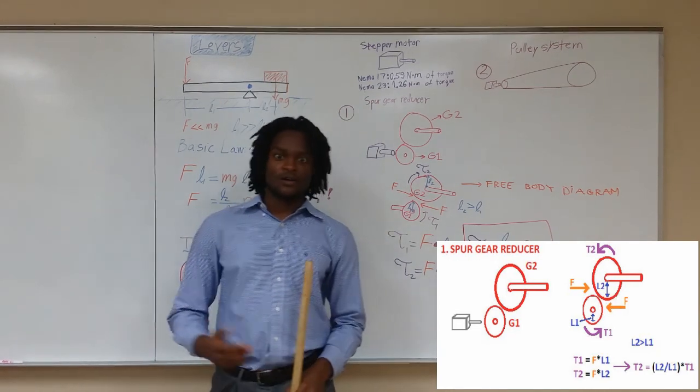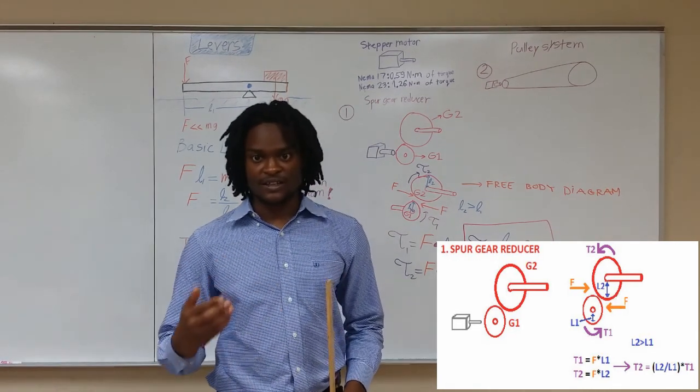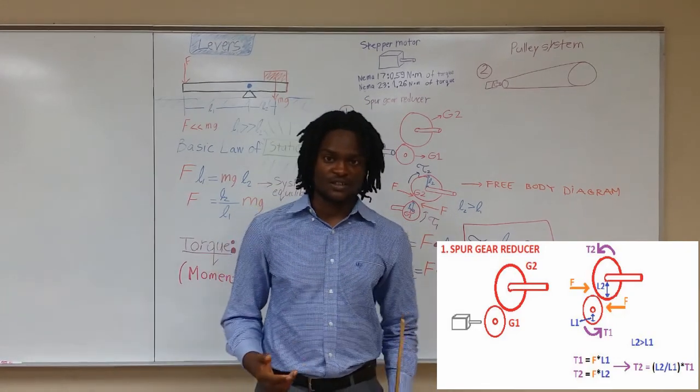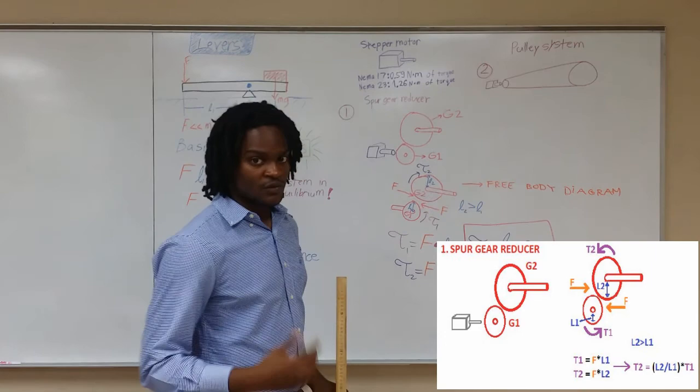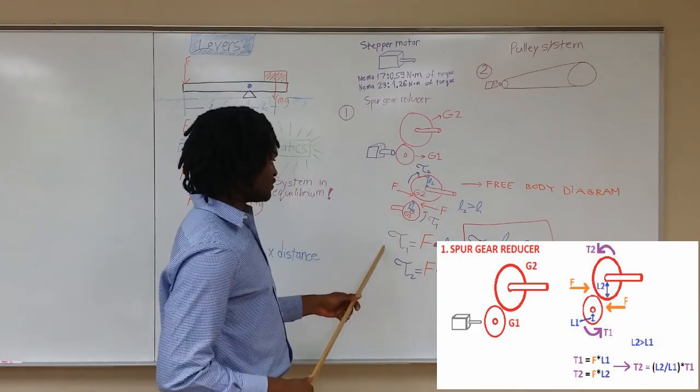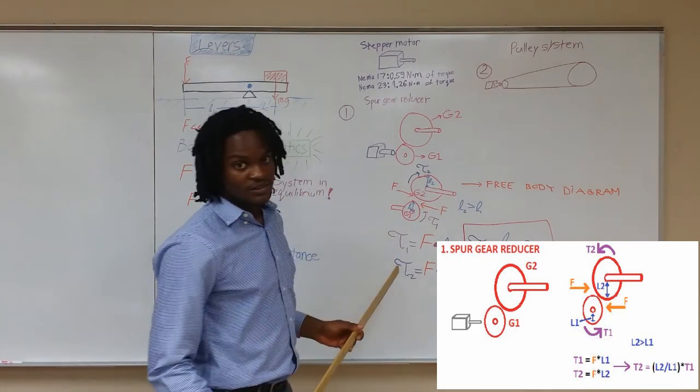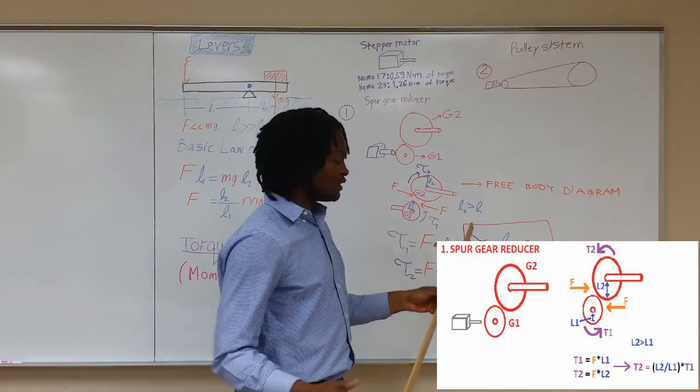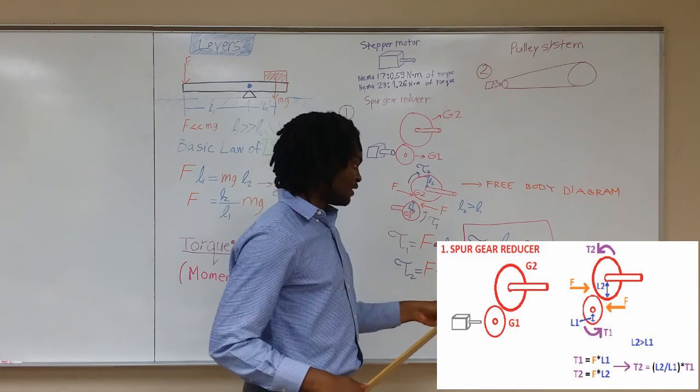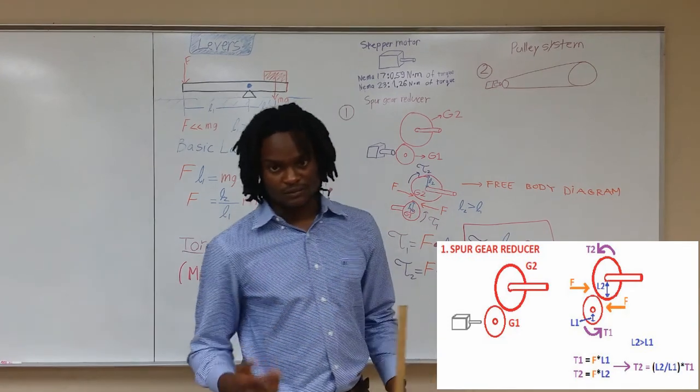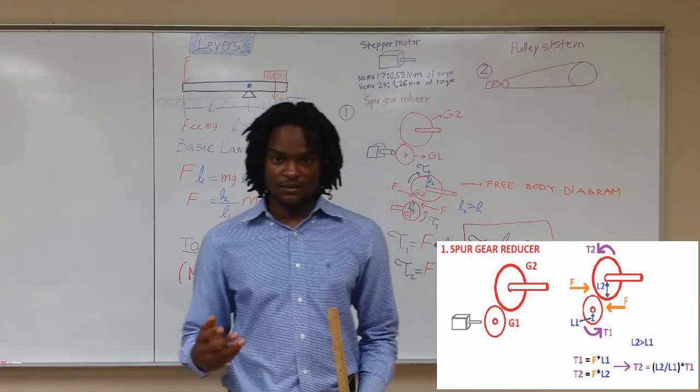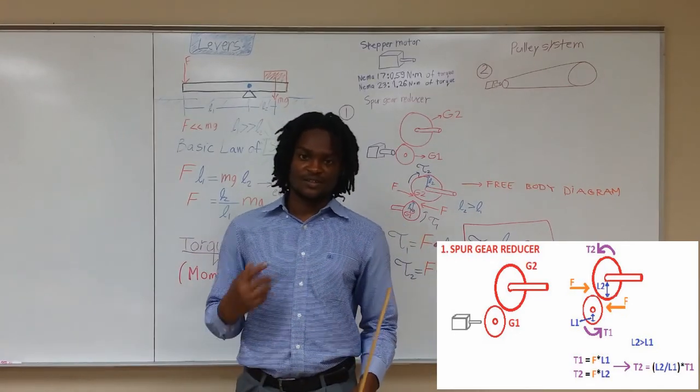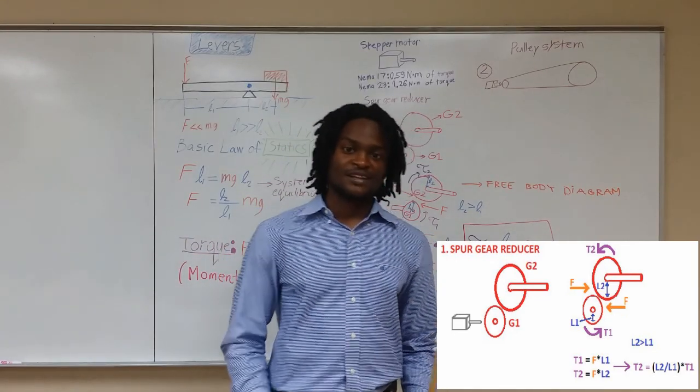According to Newton's third law, the force that gear 1 is exerting on gear 2 is equal to the force that gear 2 is exerting on gear 1. From the free body diagram, we can obtain these two equations. And from these two equations, we can obtain T2 is equal to L2 divided by L1 times T1. Since the radius L2 is greater than L1, we can see that T2 is larger than T1. Hence, the torque is amplified.